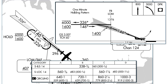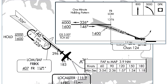On the localizer approach, the missed approach point is the runway threshold, which you can identify using GPS. Or if you don't have it, you can time it using the chart provided. An aircraft doing the approach at 90 knots ground speed will start timing from crossing the final approach fix at Frick, and after 2 minutes and 36 seconds, go missed.